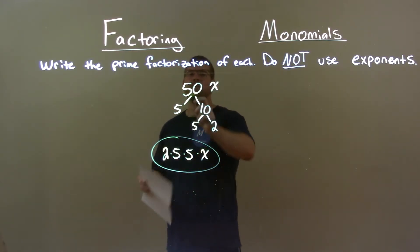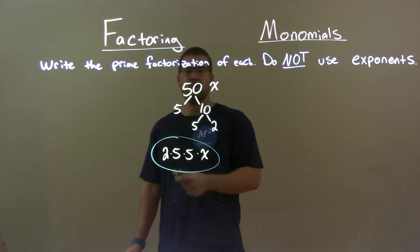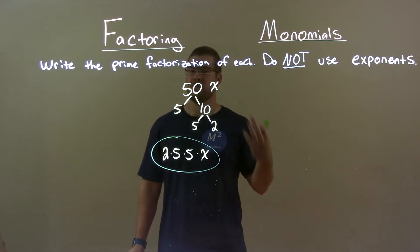Quick recap, we're given 50x, and we have to find the prime factorization of it. Well, 50 breaks down to be 5 times 5 times 2, x is just x.